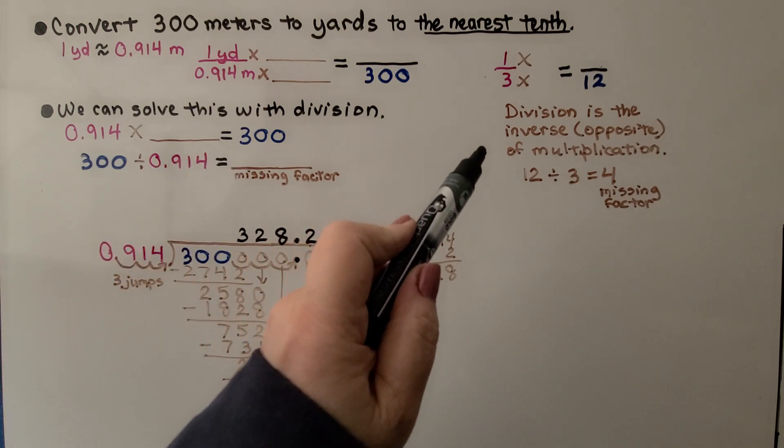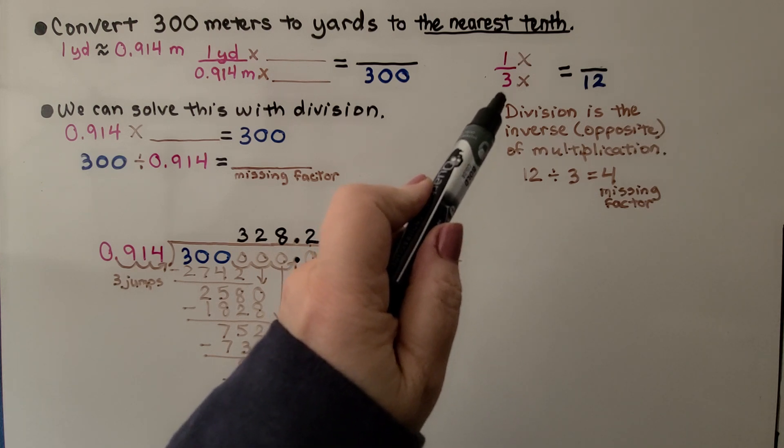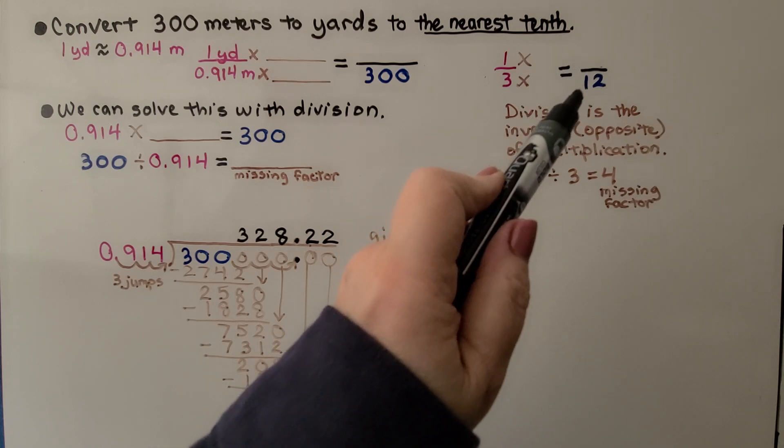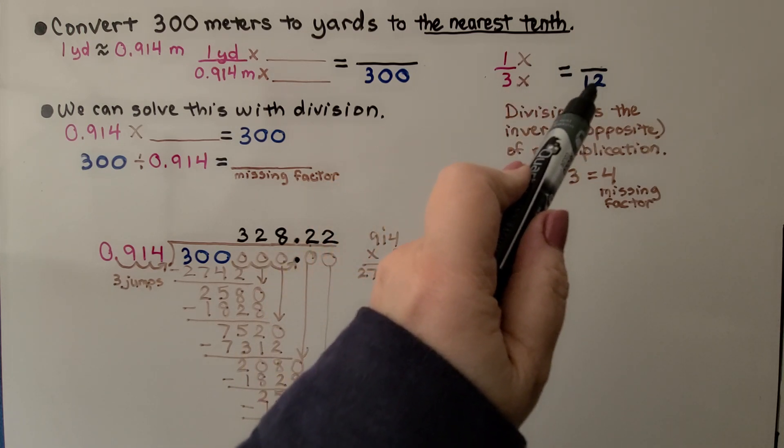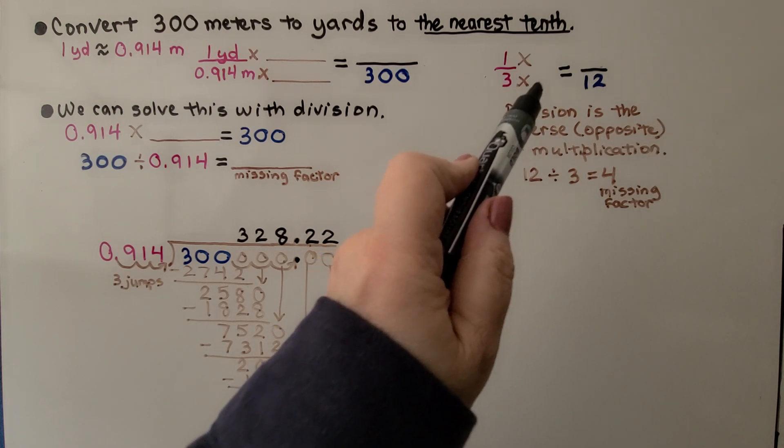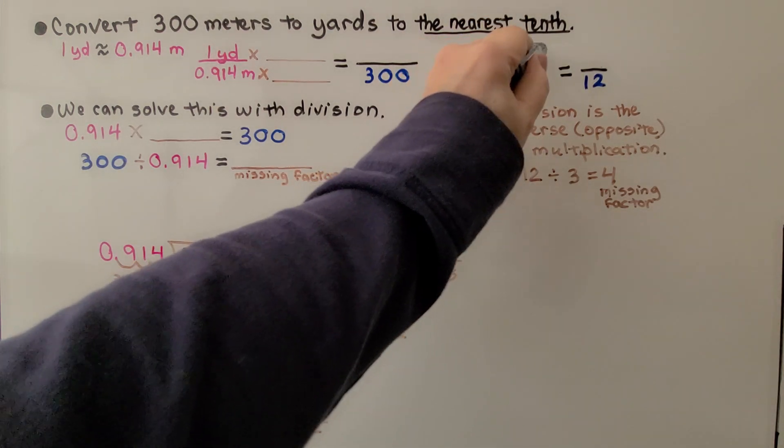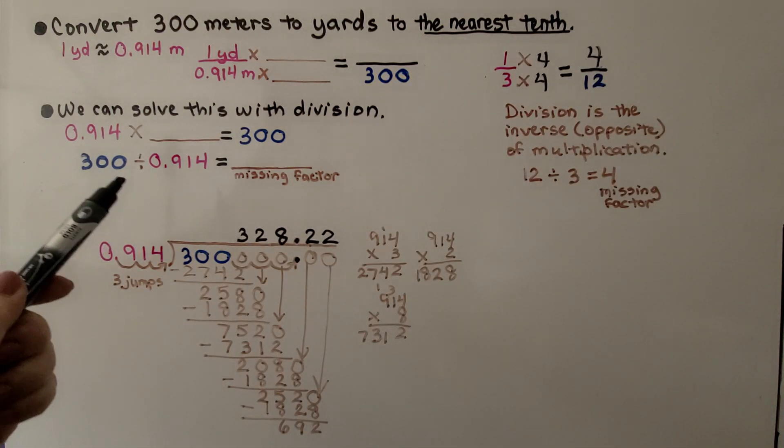And we can solve this with division. So remember, division is the inverse opposite operation of multiplication. If we saw one third is equal to something twelfths, and we didn't know what to multiply this by, we could do 12 divided by 3, and that would give us that missing factor. We'd know it's a 4. Then we would know to multiply the numerator by 4, and we would know that's a 4. So that's what we're going to do here.